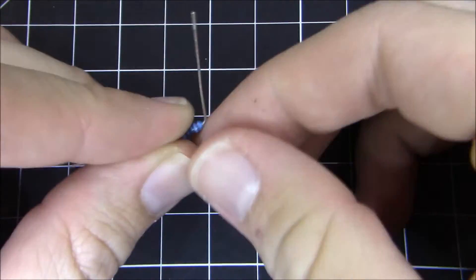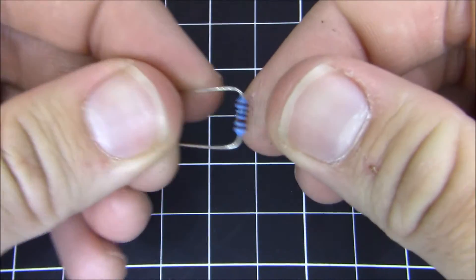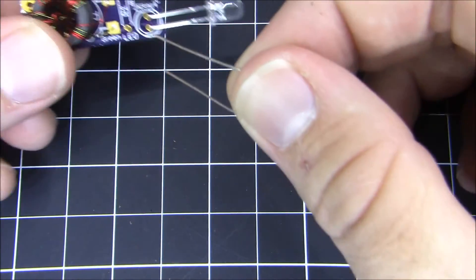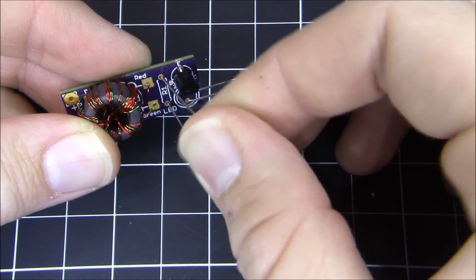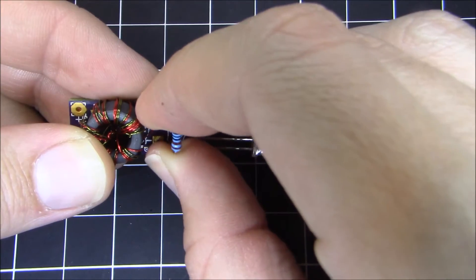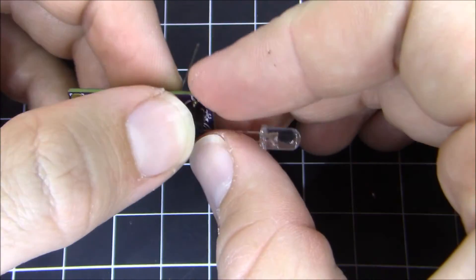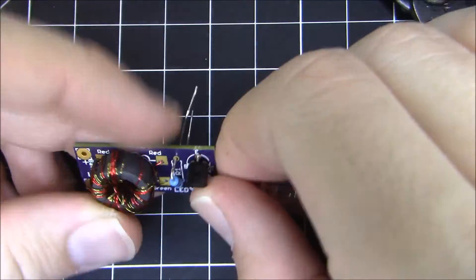Moving on to the 1k ohm resistor. So what you want to do is bend it into a U shape and then stuff it into the board like this. If you have a hard time pushing it through, grab your needle nose pliers and pull it through a little bit more to make it flush with the PCB.